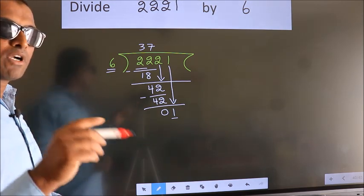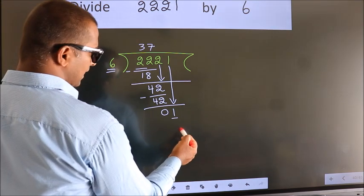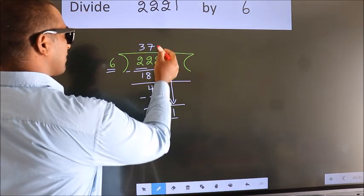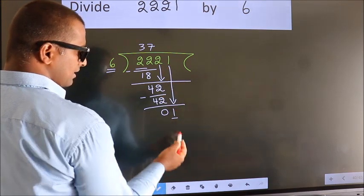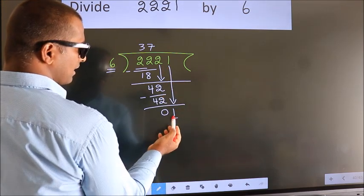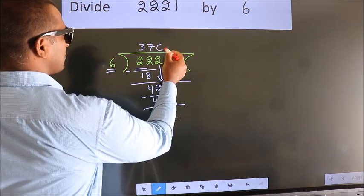Instead of that, what we should think of doing is which number should we take here. If I write 1, we get 6. But 6 is larger than 1. So what we do is we take 0 here.